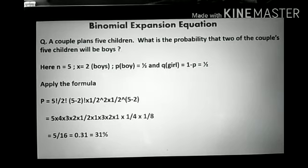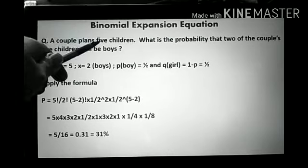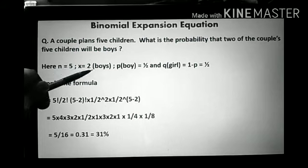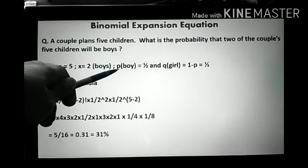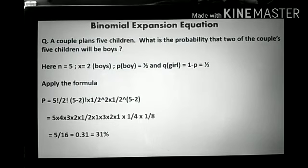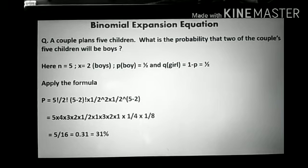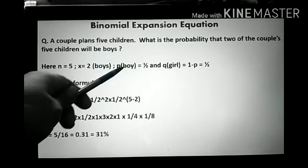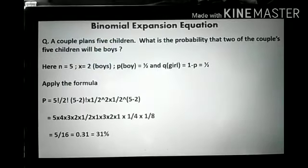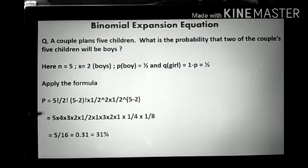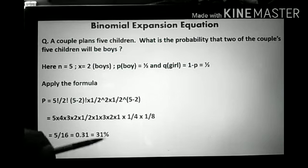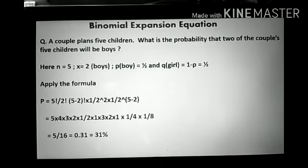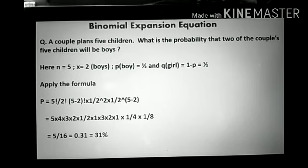By applying the formula, we get a probability of 26% of getting children with blue eyes. Another example: if a couple plans 5 children, what is the probability that 2 of the 5 children will be boys and 3 will be girls? Total unordered events = 5, boys (x) = 2. Probability of getting a boy is 1 by 2 and probability of getting a girl is 1 by 2. Applying the formula, we get a result of 31% — meaning the probability of getting exactly 2 boys out of 5 children is 31%.